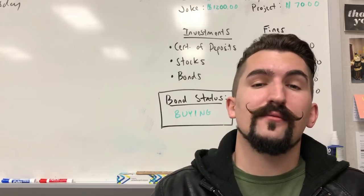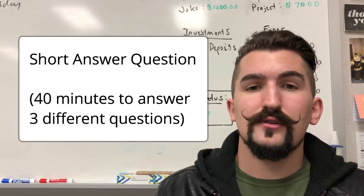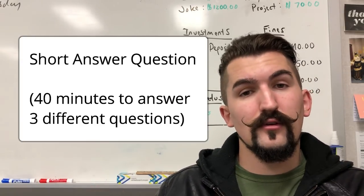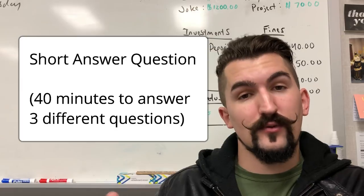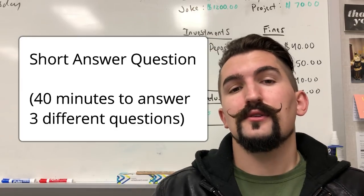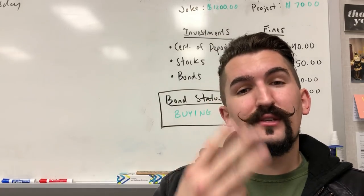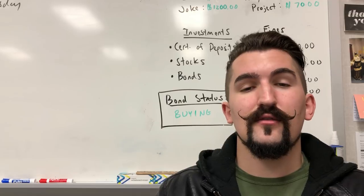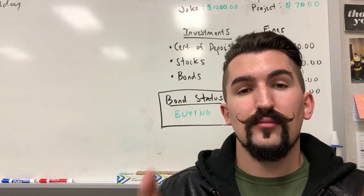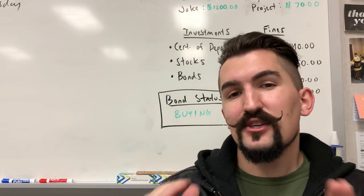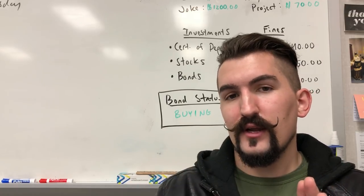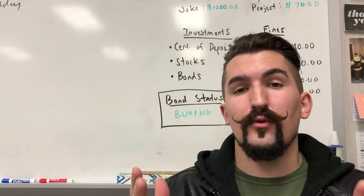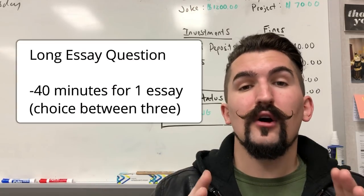Now you have three types of written questions. The first is a short answer question — you will have to answer two, and then for the third you have a choice between two. So you will be answering three total in 40 minutes, giving you roughly 13 and a third minutes to complete each one. Each of those three short answers is worth three points for nine points total.